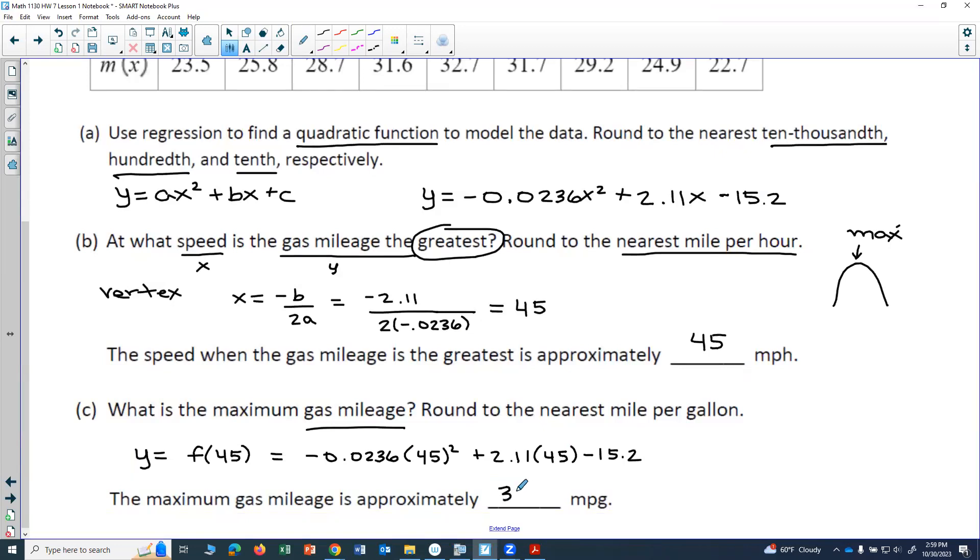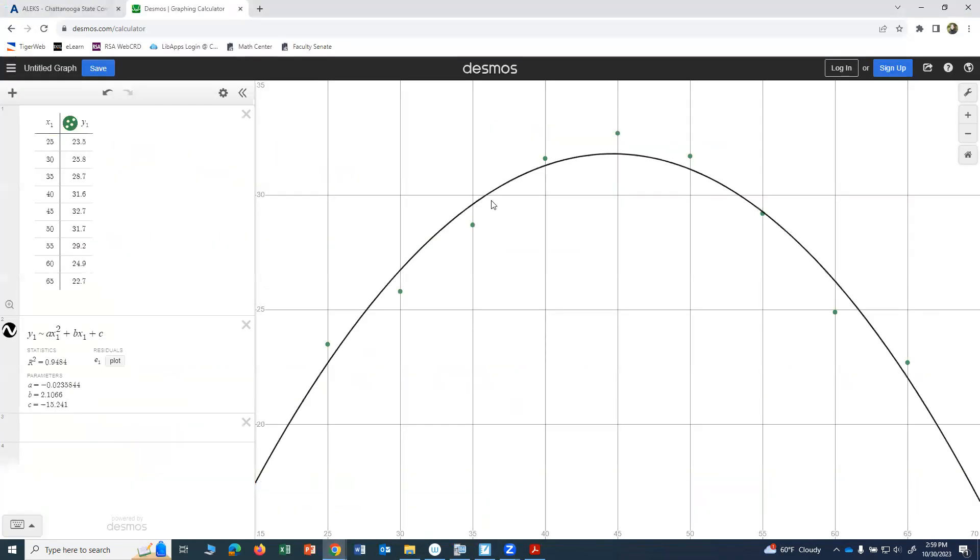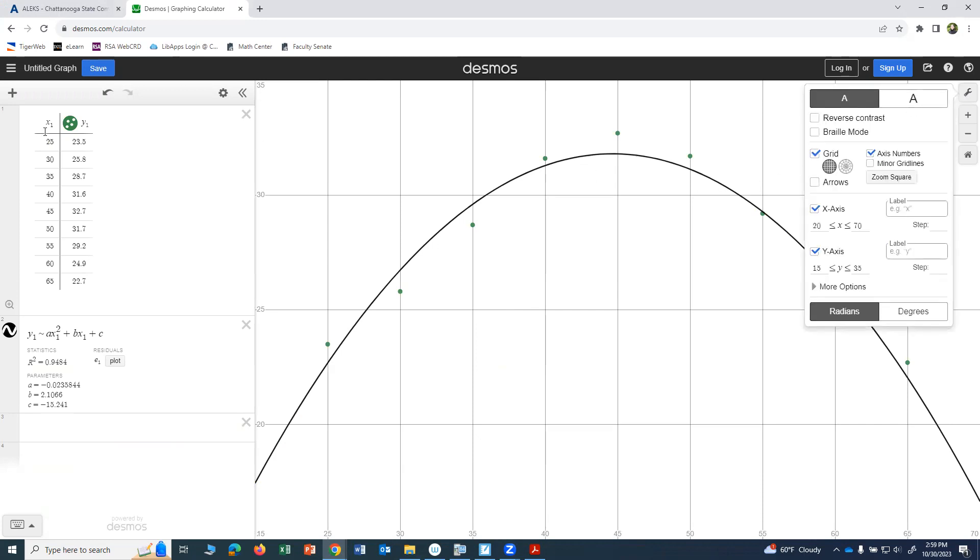So I used Desmos to find the equation. I also got this great scatter plot and a great visual of my graph. Remember to set my window. So what I did was I looked for the X minimum and X maximum. I looked below my lowest X value on the table and above my highest X value on the table. For the Y, I did the same thing: some number less than my lowest Y value, and then for the maximum, a number greater than my highest Y value. So that was quadratic regression. Now let's do one with cubic.